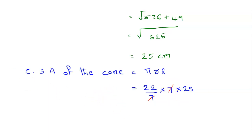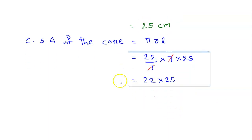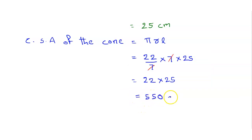So we calculate 22 into 25, which gives 550. Therefore the curved surface area of one joker cap is 550 centimetre square.